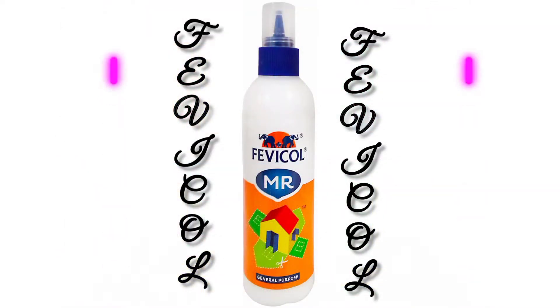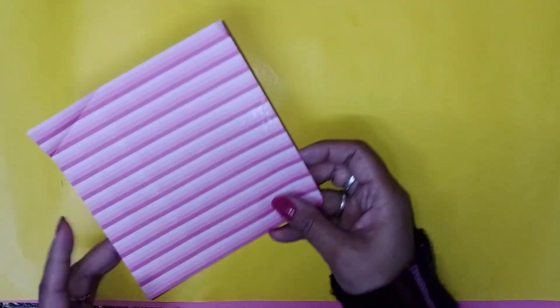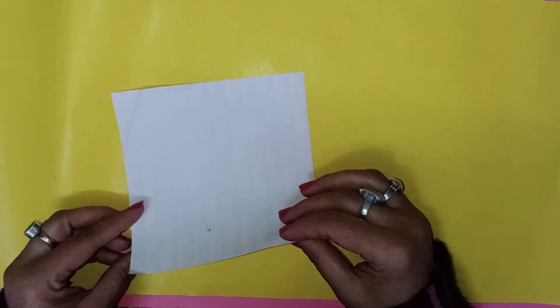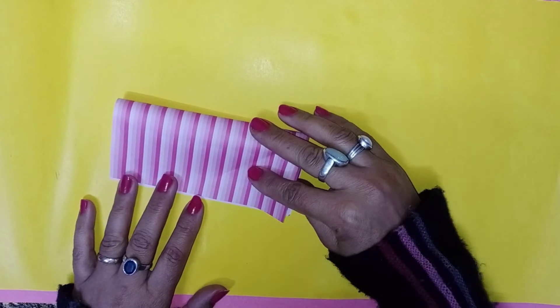Origami sheets, color, and Fevicol. Let's start. I am taking a printed origami sheet for the cap.